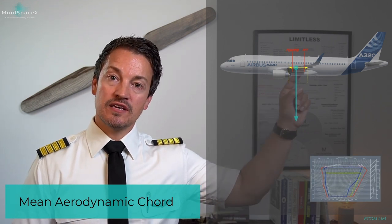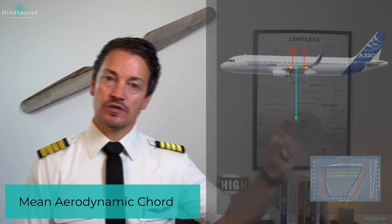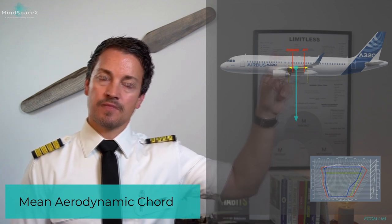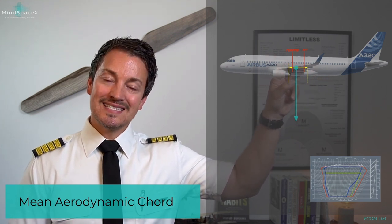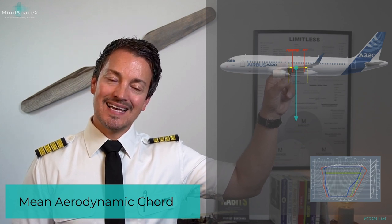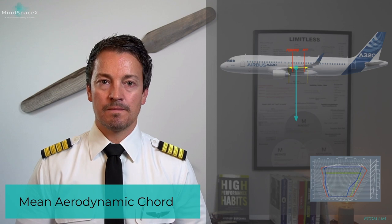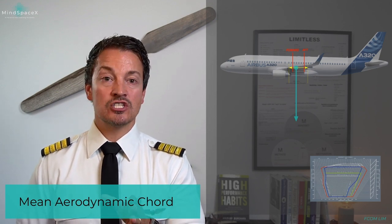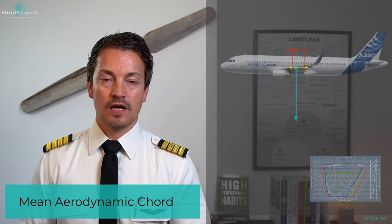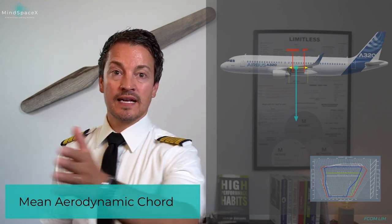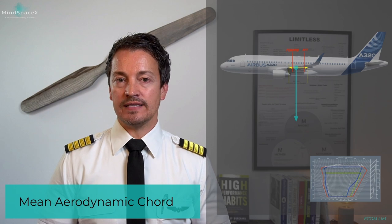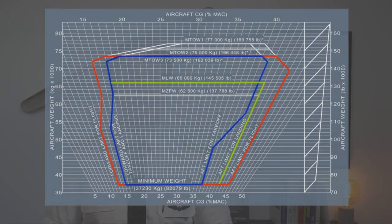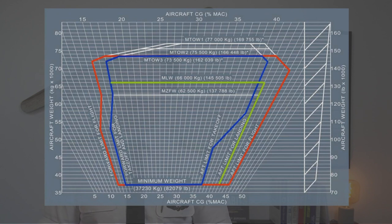The center of gravity is the point around which the aircraft pivots. For longitudinal stability — pitching up and down — the CG must always remain within the forward and aft limits. The forward and aft limits are not 0 and 100%; that is just the MAC line itself. The actual CG limits, for example, might be between 24% and 50% MAC. That is what we use the CG envelope for.